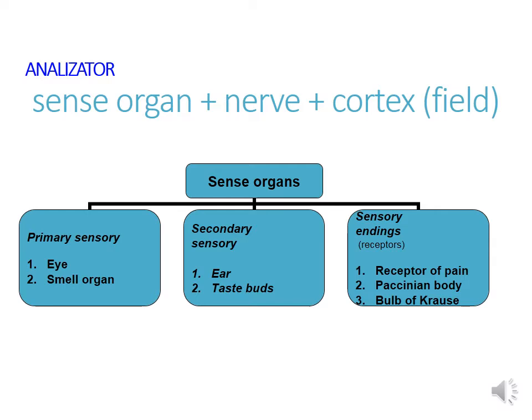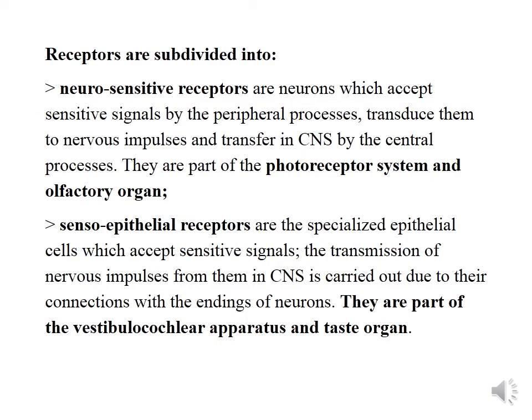For primary sensory organs we include the eye and the smell organ. Neurosensitive receptors are neurons which accept sensitive signals by peripheral process. Sensoriepithelial receptors are specialized epithelial cells which accept sensitive signals and then transmit them. Parts of neurosensitive receptors are the photoreceptor system and olfactory organs. Parts of sensoriepithelial receptors are the vestibulocochlear apparatus and distal organs.